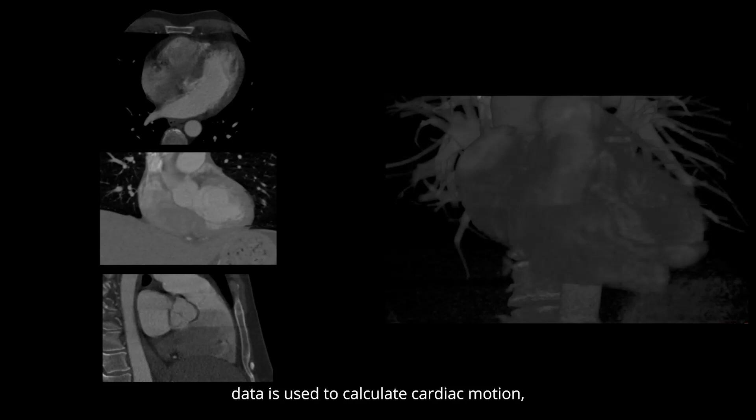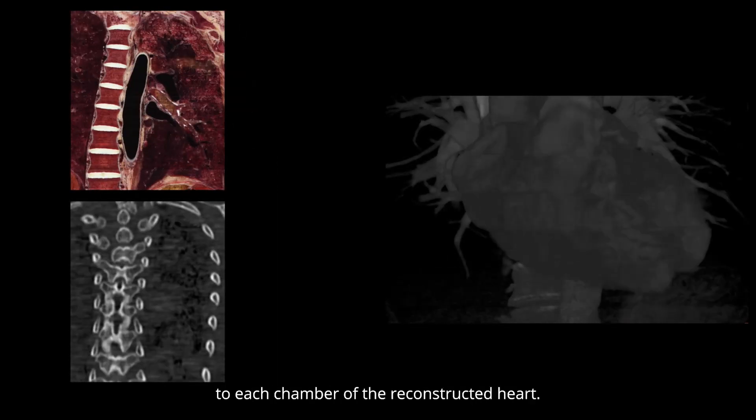Additionally, live cardiac CT data is used to calculate cardiac motion, which is then accurately mapped to each chamber of the reconstructed heart.